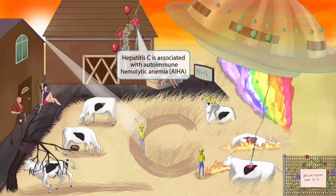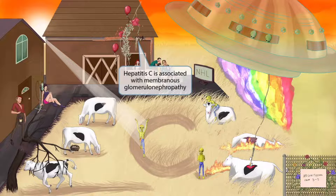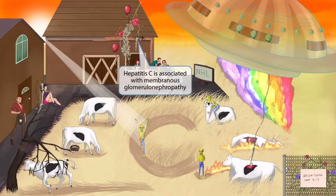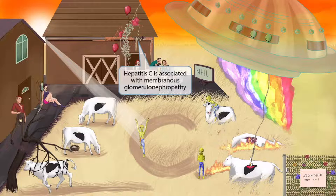Some antenna clumps smash into the rain gutter, damaging it so that water spills out. This rain gutter represents the basement membrane in membranous glomerulonephropathy. The antenna clumps represent immune complexes which attack the basement membrane. The left image shows a glomerulus with a normal basement membrane, whereas the right image shows membranous glomerulonephropathy — you can see how the basement membrane is thickened all around the glomerulus. This is a very important association to remember with hepatitis C.